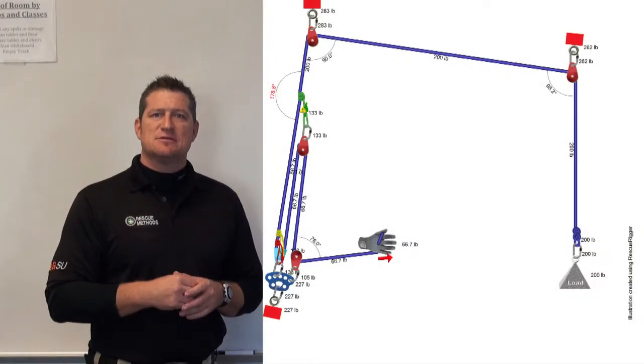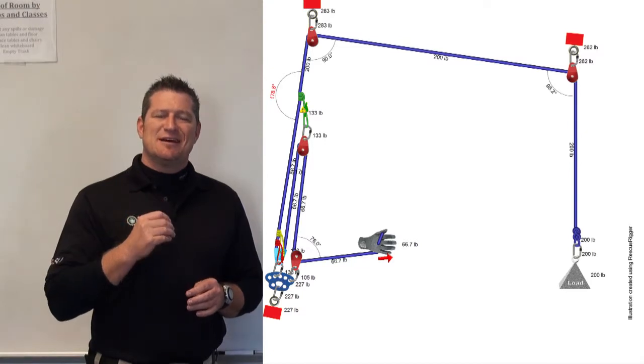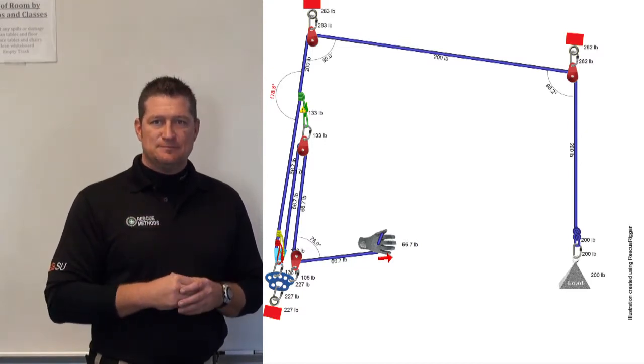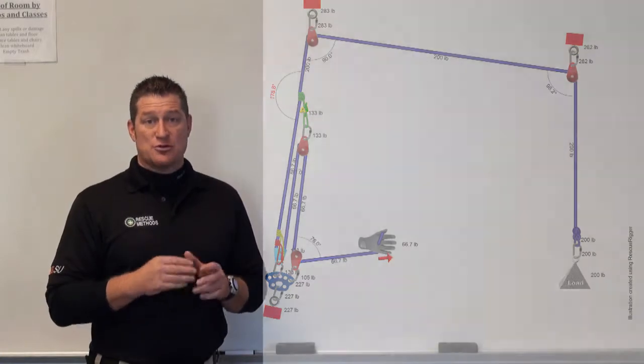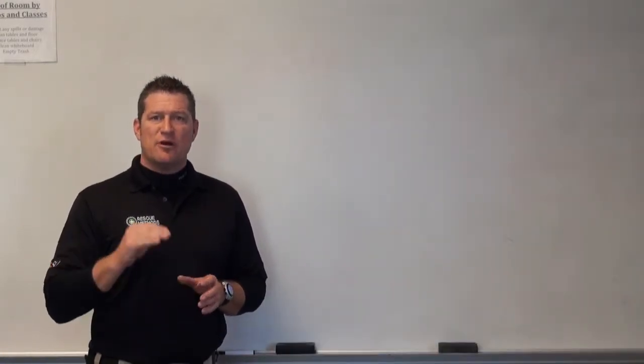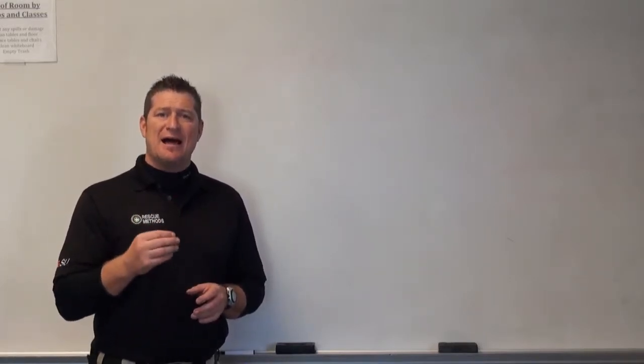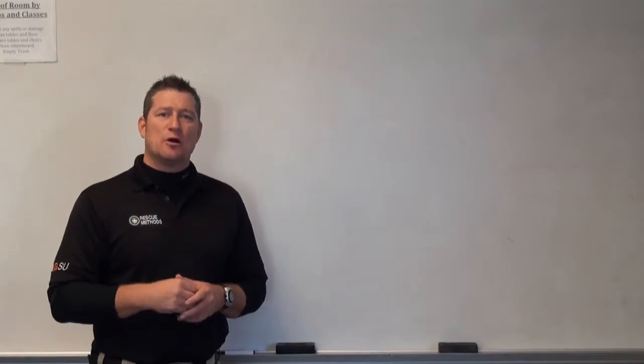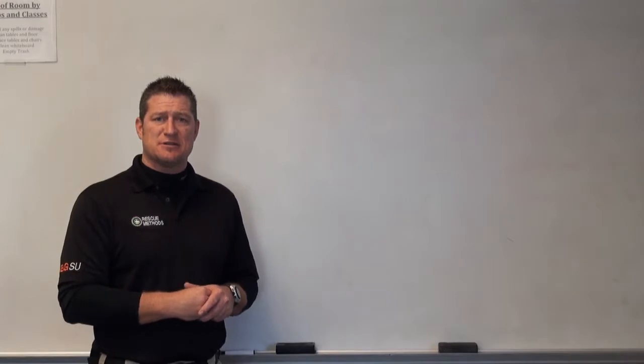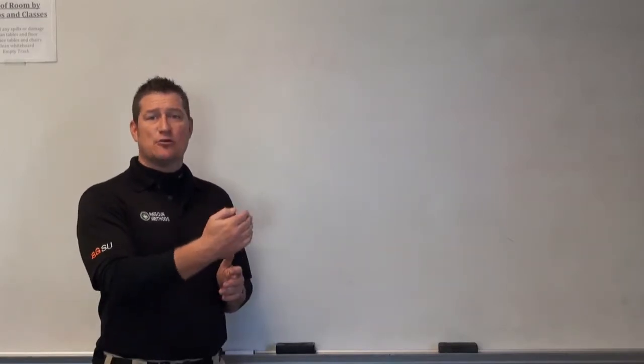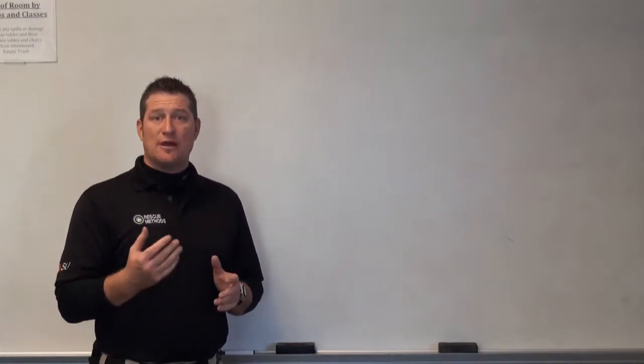Every one of those components, as well as edge transitions and any redirectional components, create additional force to that system that makes that perceived or potential force or load relationship very hypothetical. As we add more appliances or pulleys, as we add more edges, as we add more components to that system, taking it beyond that relationship I just discussed of a single rope coming to the anchor and a single rope coming out of the anchor, every one of those components correlates to additional friction.